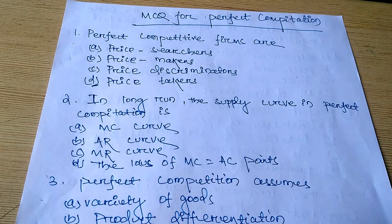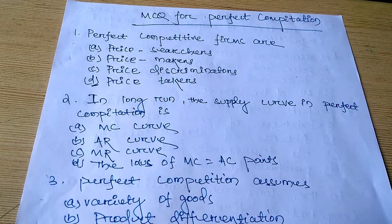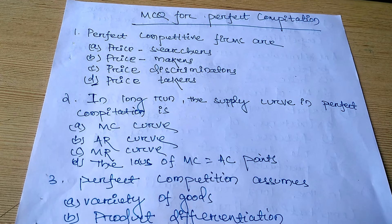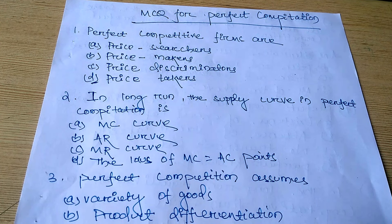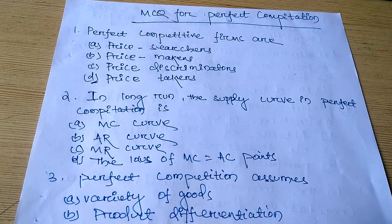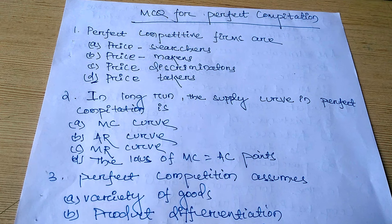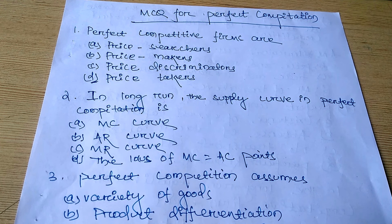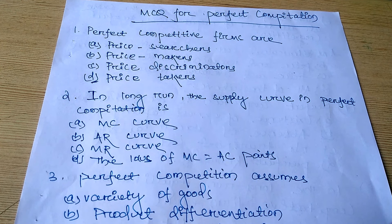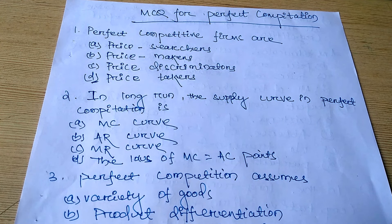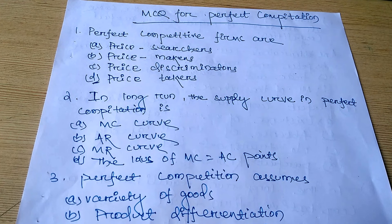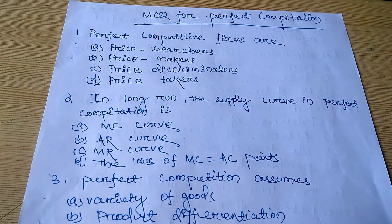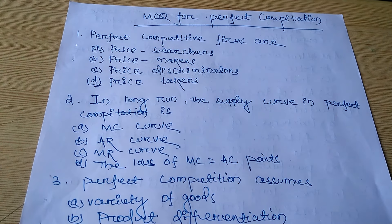We also discussed that when MR equals MC, and MC should cut MR from below — or MR equals MC and MC should be rising — both are the points where we have to find the equilibrium of perfect competition. You have to remember: industry is the price maker and firm is the price taker.